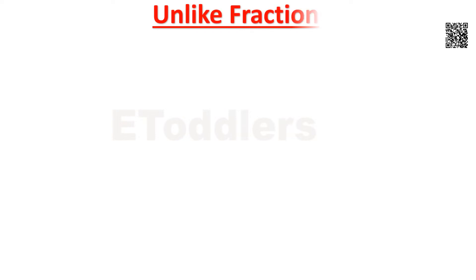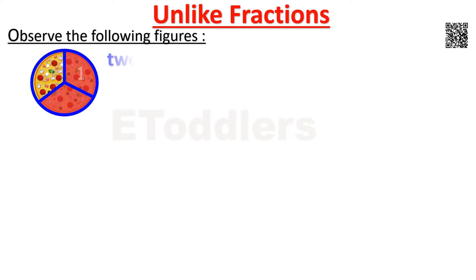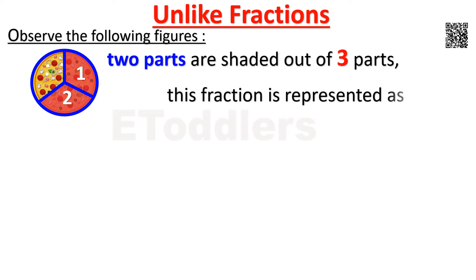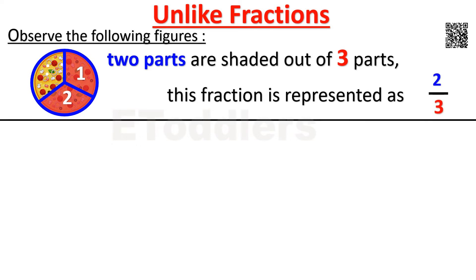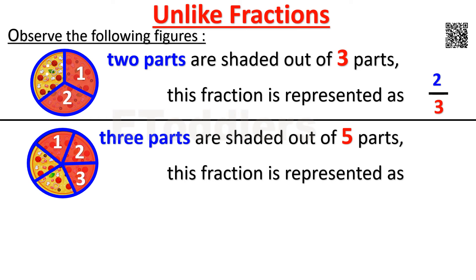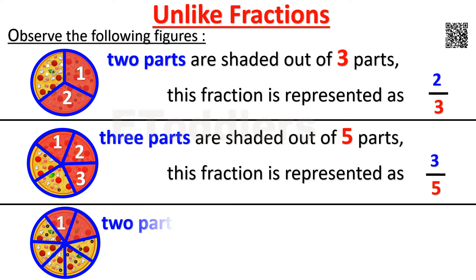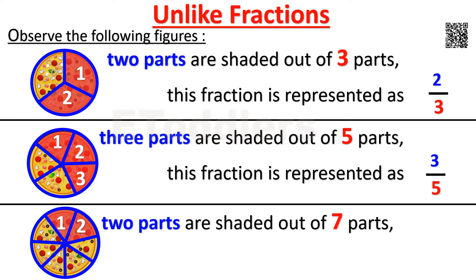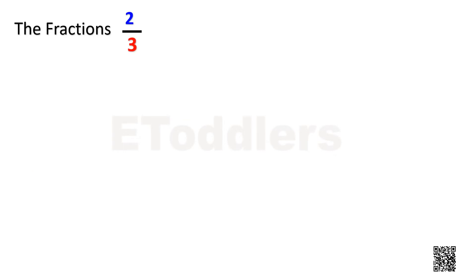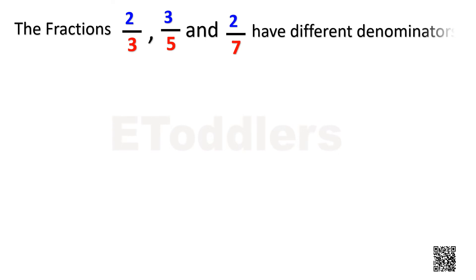Now let's understand unlike fractions with examples. Observe the following figures. Two parts are shaded out of three parts — this fraction is represented as 2 by 3. Three parts are shaded out of five parts. Two parts are shaded out of seven parts — this fraction is represented as 2 by 7. The fractions 2 by 3, 3 by 5, and 2 by 7 have different denominators — that is, 3, 5, and 7.